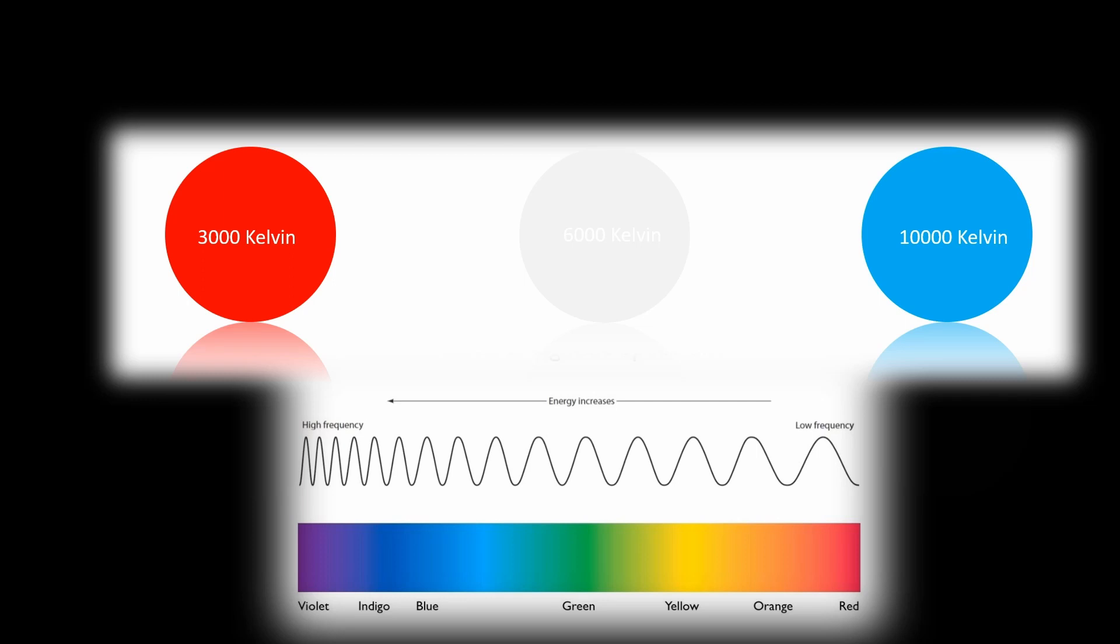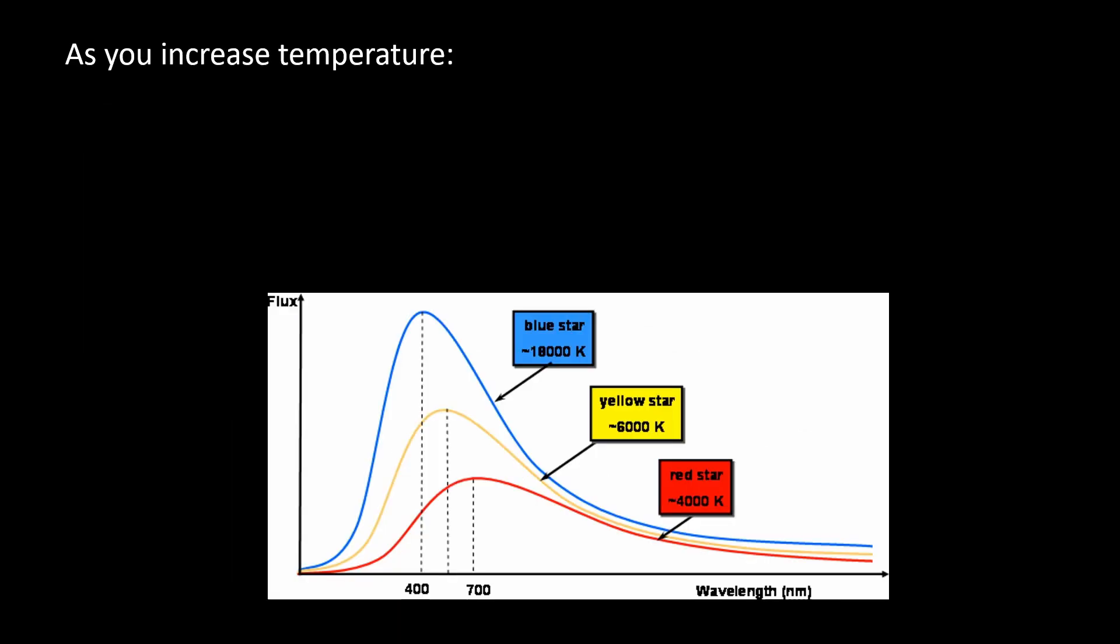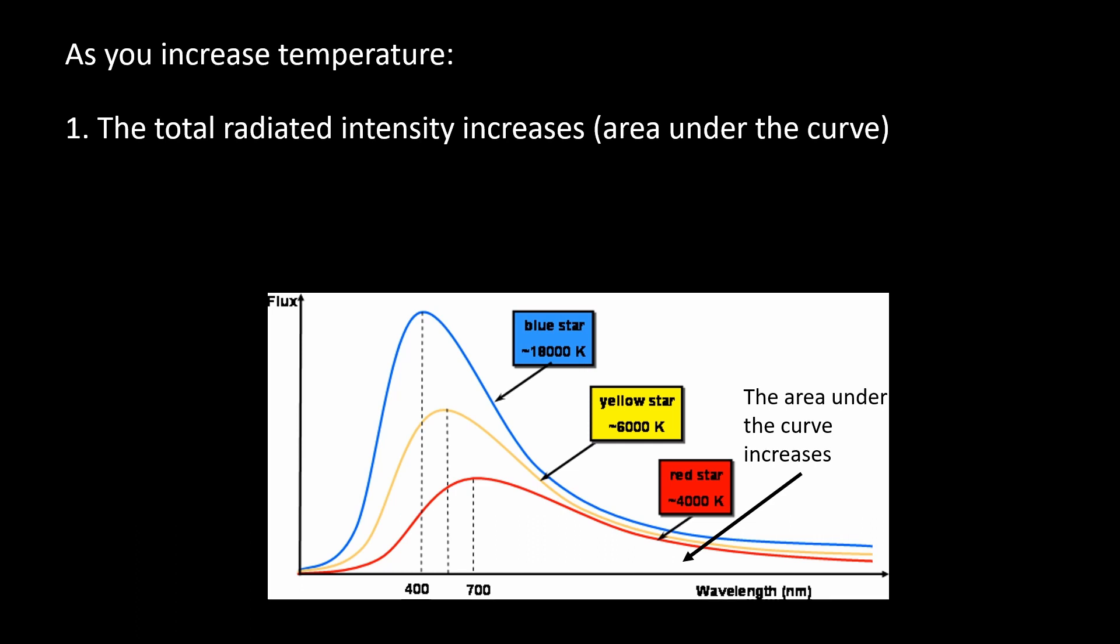As a black body's temperature increases, two features become evident. One, the total radiant intensity increases and this is the area under the curve. And two, the peak of the spectrum shifts to shorter wavelengths.